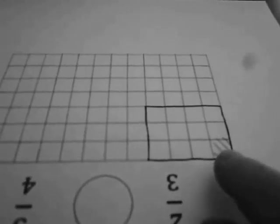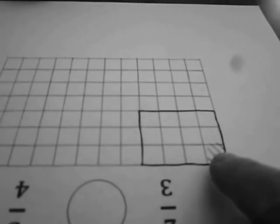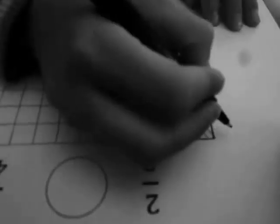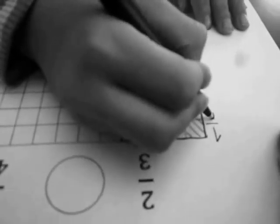So if you have twelve boxes all together, what fraction is the shaded box of the whole thing? It's one out of what? One? One-twelfth. One-twelfth. Okay. Over here, write one-twelfth, please. Good.